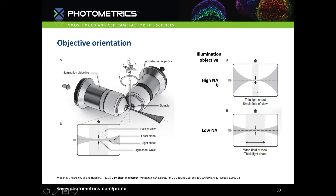The thickness of the sheet — the beam waist — is what the resolution of a lightsheet is based on: the thinner the lightsheet, the better the resolution. The field of view is dictated by the detection objective, and the aim is to match it so the field of view matches the position of the beam waist. A high NA objective gives a thin lightsheet but a small field of view; a low NA objective gives a thicker sheet but a larger field of view. The decision depends on sample size.